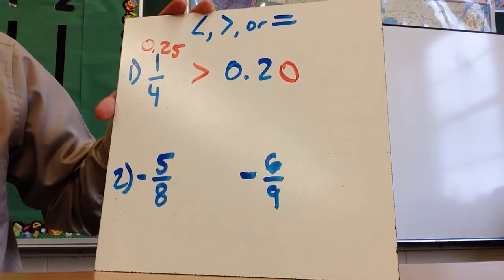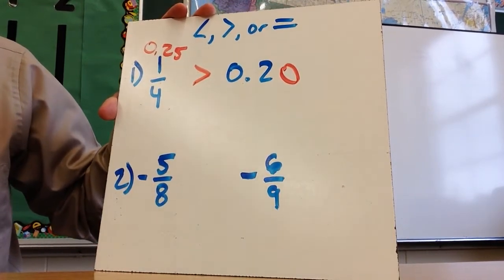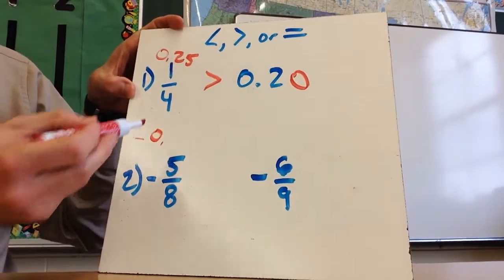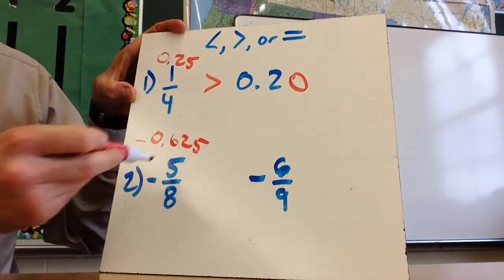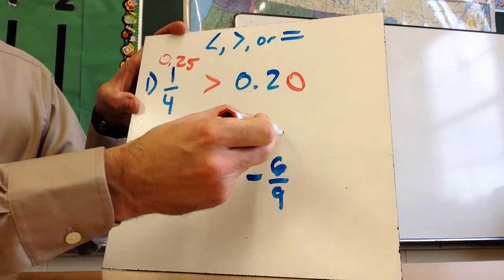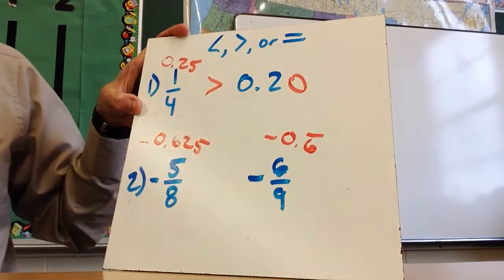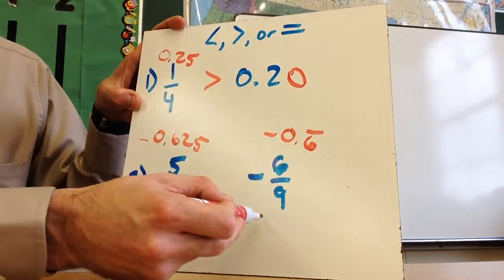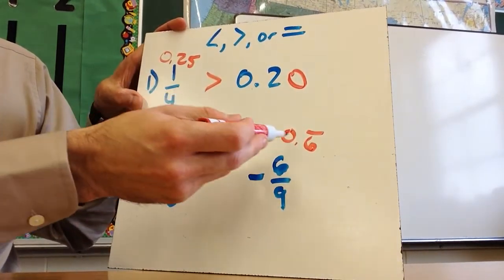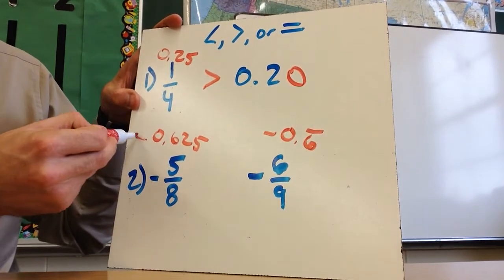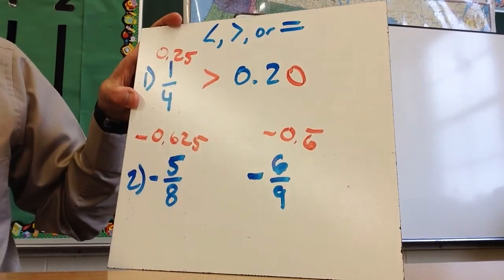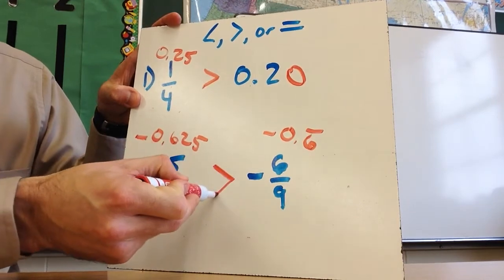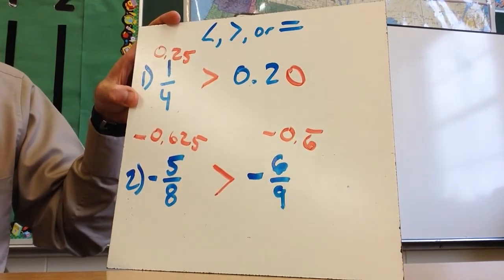And then if I come down here to the negative 5 eighths and negative 6 ninths, negative 5 eighths, if I change this to a decimal, it becomes negative 0.625. All right, so it's 5 divided by 8. And over here, this is negative 0.6 repeating. So the question is, which one is larger? Remember, this is like 6, 6, 6, and this is 6, 2, 5. So while the 6, 6, 6 is actually larger than the 6, 2, 5, remember these are negative numbers, which means that negative 0.625 is actually closer to 0 than negative 0.6 repeating. So this fraction is larger because it is closer to 0 since they're on the negative side.